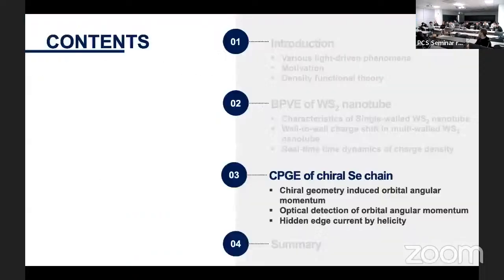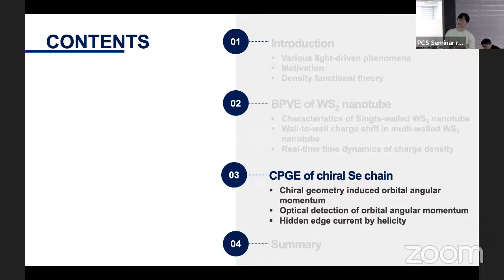Including atomic motion in the calculation, photocurrent can be further enhanced. At 0.9 eV frequency, the excitation targets the anti-bonding state between tungsten and sulfur. Excitation from the bonding state creates large charge fluctuations, which produces the large photocurrent in this material. Up to here, I have presented the bulk photovoltaic effect of tungsten nanotubes. I now move on to the circular photogalvanic effect of the chiral selenium chain.